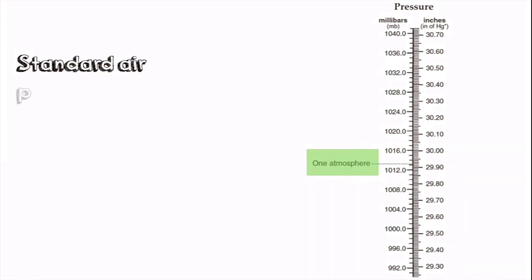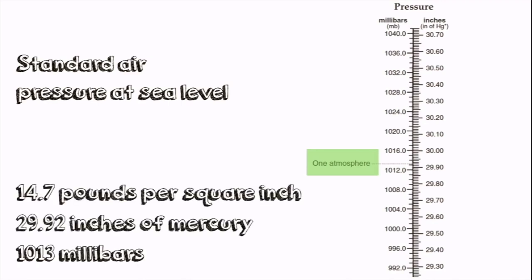One atmosphere — standard air pressure at sea level — is equal to 14.7 pounds per square inch. Right now, you have 14.7 pounds of air pushing down on every square inch of your body; you don't feel it because we've adapted to that. Converting one atmosphere: it equals 29.92 inches of mercury, or 1,013 millibars. You can always look back to the reference table for those values.